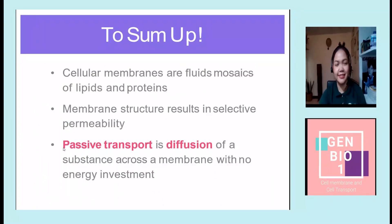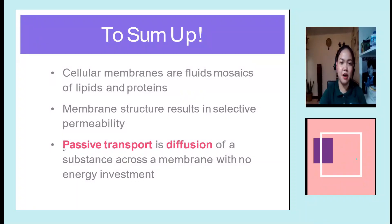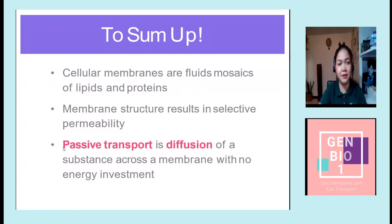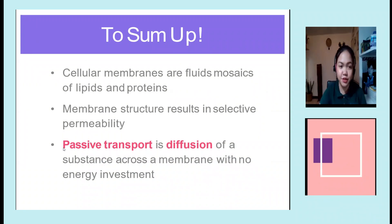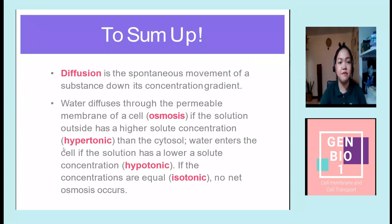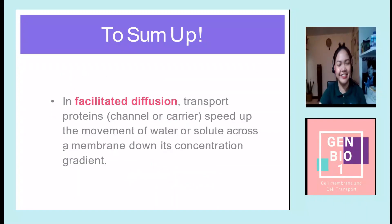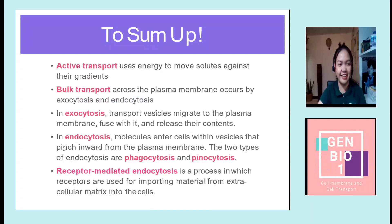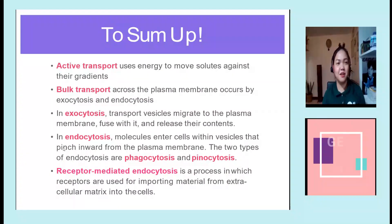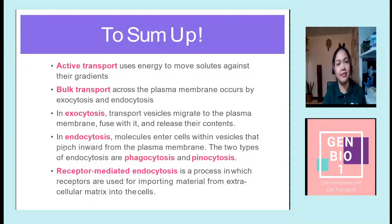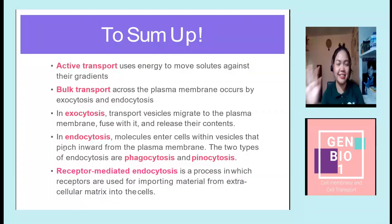To sum it up: cellular membranes are fluid mosaics of lipid and proteins, and membrane structure results in selective permeability. Passive transport is the diffusion of a substance across a membrane with no energy investment, and diffusion is the spontaneous movement of a substance down its concentration gradient. That's all for the cell membrane and transport mechanisms. I hope you learned something — bye for now, see you in the next video.